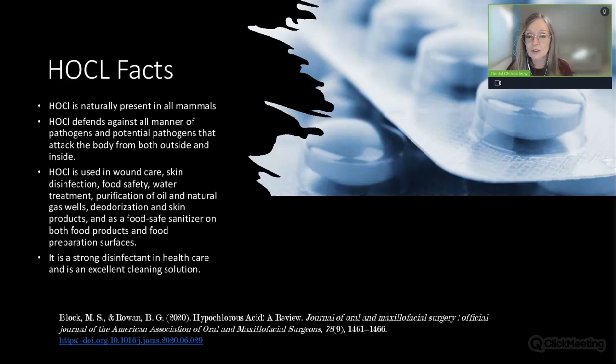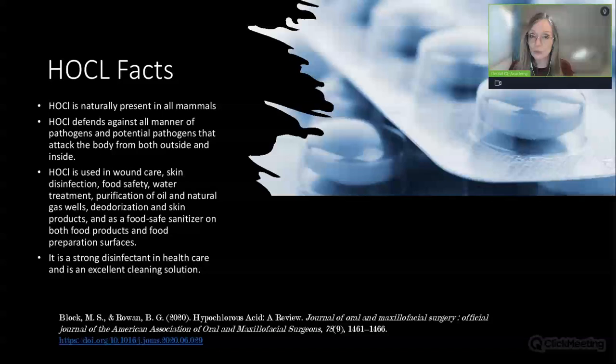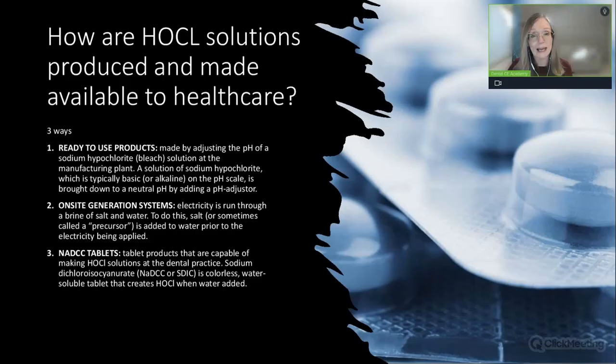Hypochlorous acid is naturally present in all mammals—we produce it—and it defends against all manner of pathogens from both outside and inside the body. It's used in wound care and food safety. If you go into a grocery store and hear the sprayer in the produce section, they're probably using hypochlorous acid. It's a strong disinfectant in healthcare settings and an excellent cleaning solution, but it has to be used at the right concentration, for the right duration, and at the right pH.